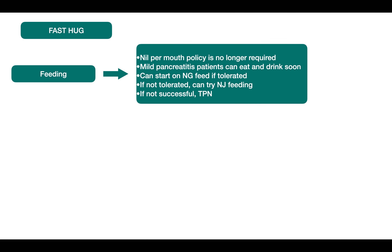The old practice was to keep the patient nil per mouth to rest the gut and start TPN — this is no longer recommended. Nil by mouth is no longer required. Mild pancreatitis patients can eat and drink as soon as tolerated. For moderate or severe ICU patients, we start nasogastric feeding if tolerated; if unsuccessful, nasojejunal feeding is used. TPN is only used if enteral feeding is contraindicated or impossible.